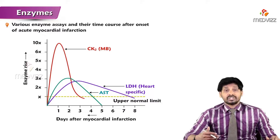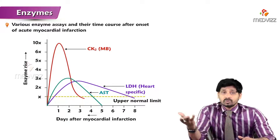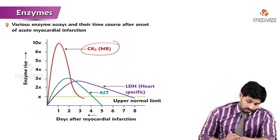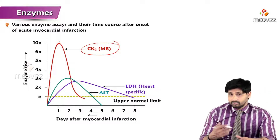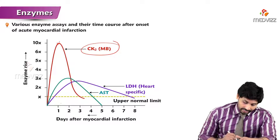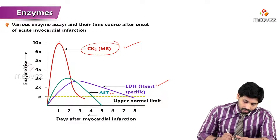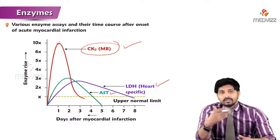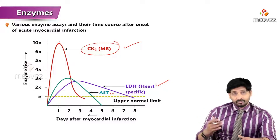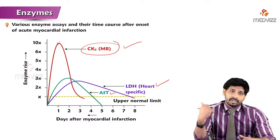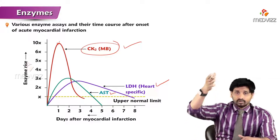In the graphical representation, you can see various enzyme assays on the time course of acute myocardial infarction. CK2 reaches maximum level within 10 to 16 hours. LDH peaks at 2 to 3 days and returns to normal after 8 days. CK2 is shown in red, LDH in purple, and AST in green — showing their peak and return to normal levels. This allows you to analyze how these enzymes rise after onset of myocardial infarction, when they peak, and how many days it takes to return to normal.